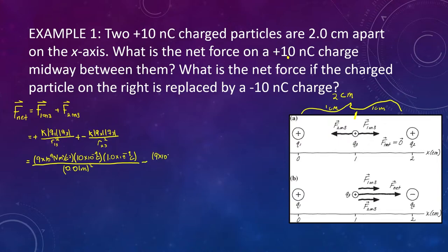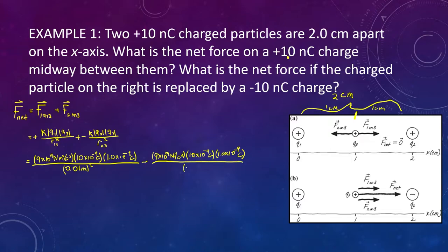Then we subtract: minus K — that's 9 times 10 to the 9 newton meters squared per coulomb squared — times 10 times 10 to the minus 9, times 1 times 10 to the minus 9, all divided by 0.01 meters squared. We said our answer is supposed to be 0. Looking at these equations, we have 9 times 10 times 1 over 0.01 squared in both cases. One's positive, one's negative, same values — so it comes out to 0 newtons of force. They're both equally pulling on that central charge.